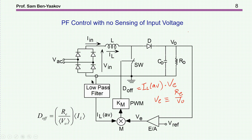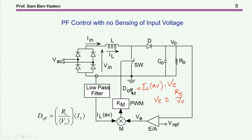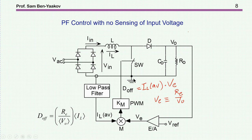Here is another configuration, also based on a boost converter, but the feedback is different. In this case, we don't sense the input — we just sense the current and the output to keep it at the required level. We multiply this average current by the error signal. As it turns out, if you generate a D-off — the off time of the switch — equal to I_L, the average current times this error signal, you will force a rectified sinusoidal waveform. Therefore, the current will be sinusoidal. There are many other topologies not only based on boost — it could be SEPIC and many other options.